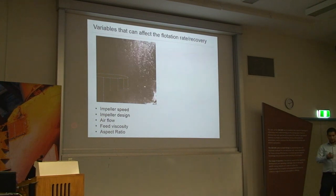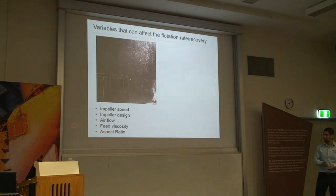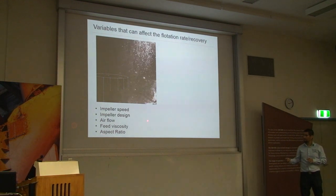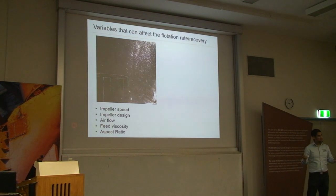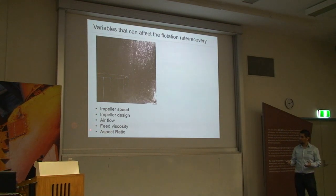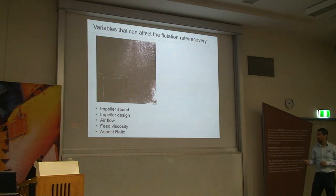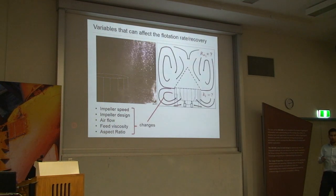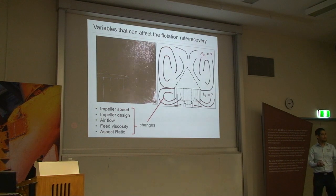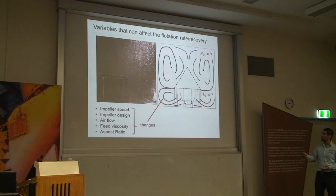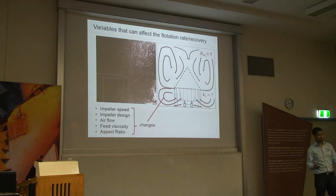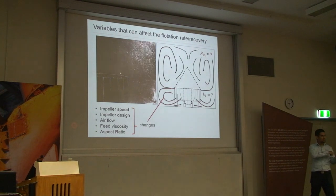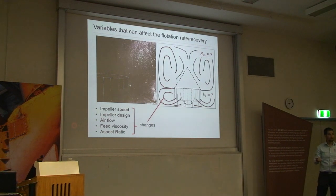After reviewing the literature, which has a lot of discussion about what affects what, I identified the most important factors: impeller speed, impeller design — which includes size, number of blades, and manufacturer — air flow rate, viscosity (in reality, solid concentration), and aspect ratio. Aspect ratio has been very poorly investigated. The key question then becomes: how do changes in any of these factors — individually or in combination — affect turbulence flow, flotation rate, ultimate recovery, and performance across different particle sizes?